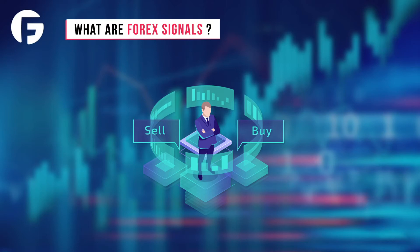The main function of signals is to help beginner traders make a profit and not lose their investments. Such signals are designed to teach still-inexperienced traders to determine the most profitable transactions: when to buy or sell an instrument, when to set a stop-loss or take profit, at what point to close a position, and how not to incur losses in the transaction or limit their number.